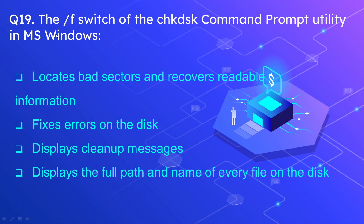Question 19: What does the /f switch of the chkdsk command prompt utility in Microsoft Windows do? The options are: it locates bad sectors and recovers readable information; it fixes errors on the disk; it displays cleanup messages; or it displays the full path and name of every file on the disk. The correct answer is that it fixes errors on the disk — that is the /f switch.